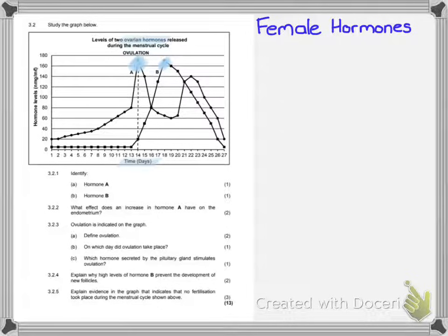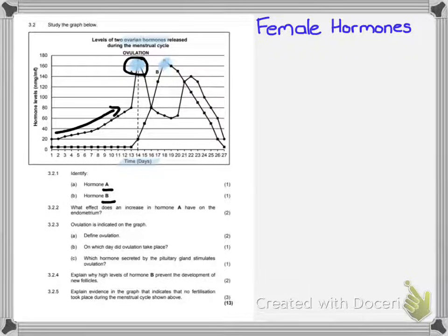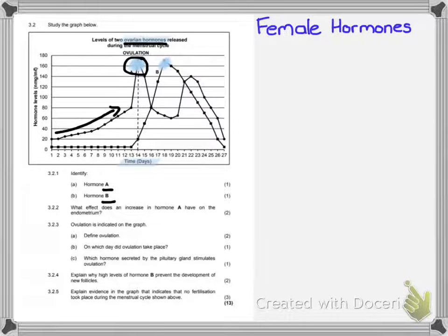The first question says identify hormone A and hormone B. The clue to figuring out hormone A is to look at the graph — hormone A is slowly increasing over time and then peaks around day 14. This makes sense for estrogen, because estrogen is slowly released as the follicle grows and gets bigger. You might think it's LH because LH also peaks on day 14, but remember the graph heading says 'ovarian hormones,' so it cannot be FSH or LH. Therefore hormone A must be estrogen.